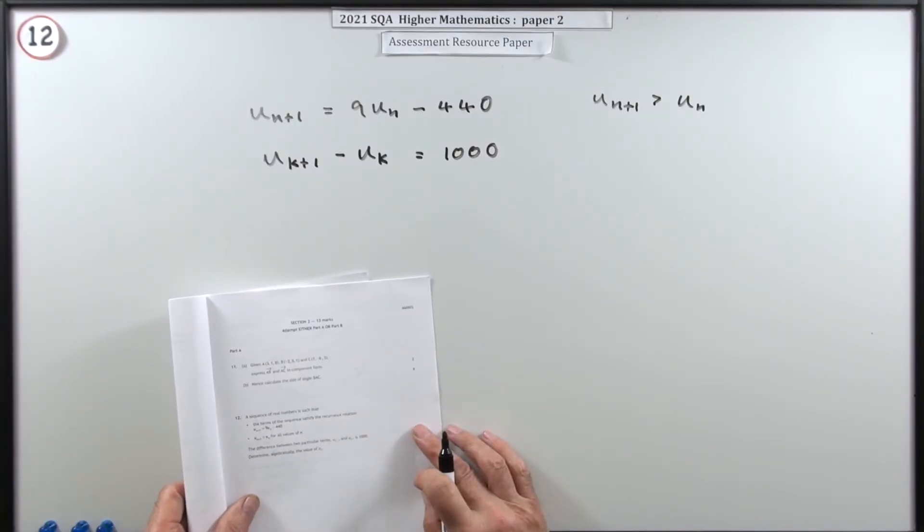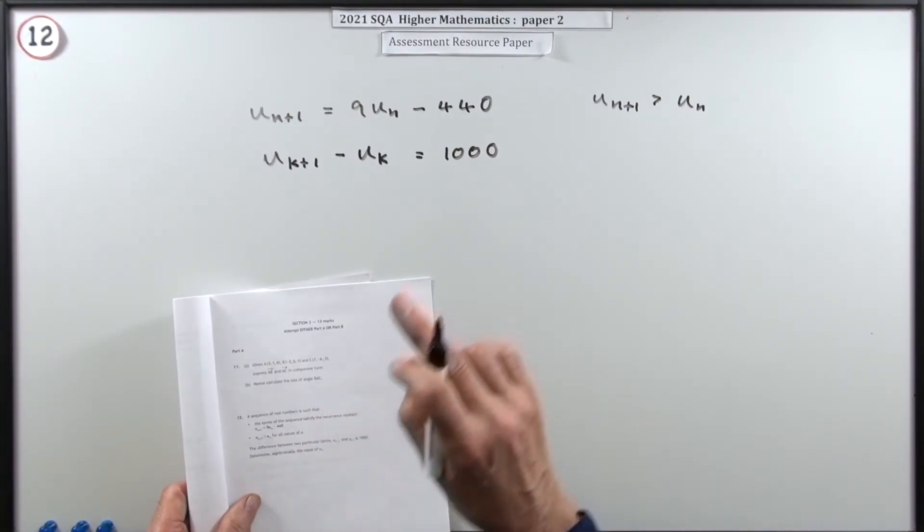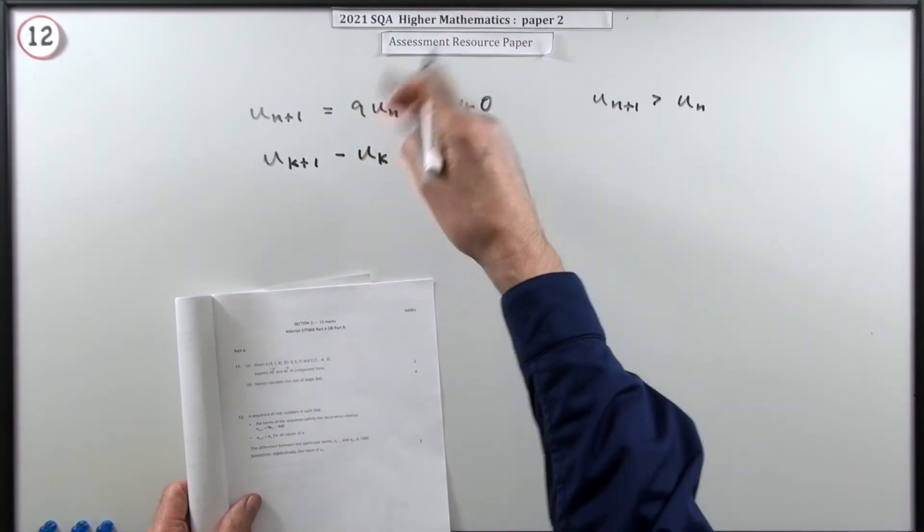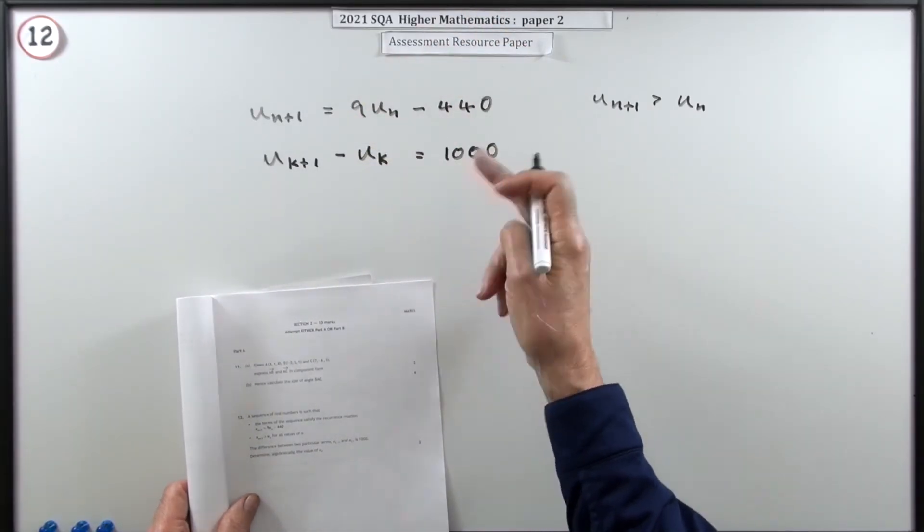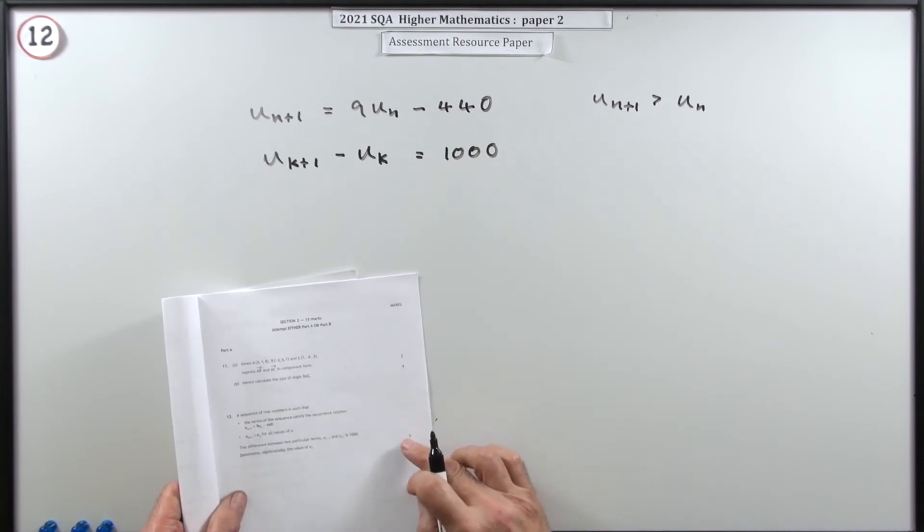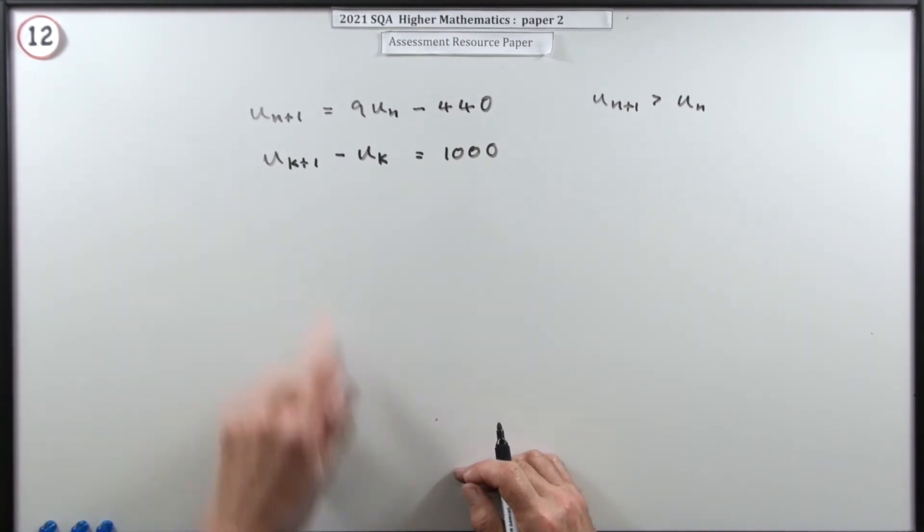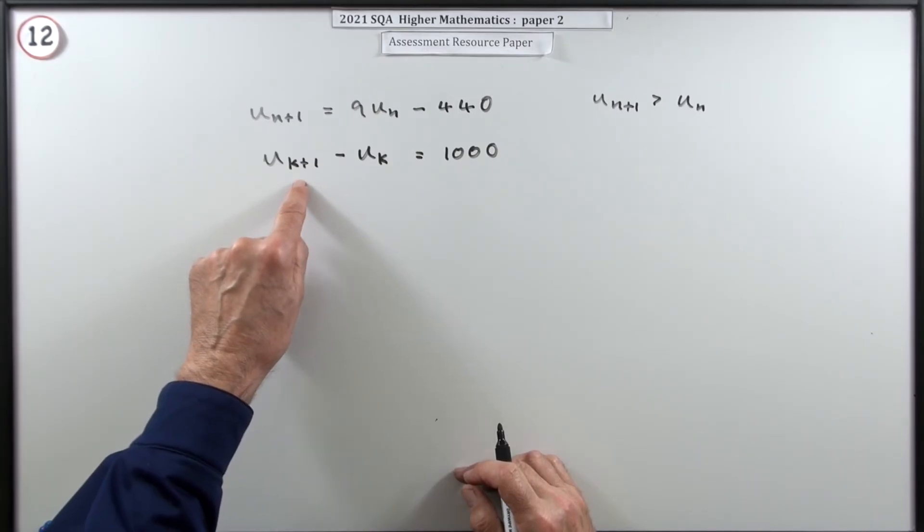Determine algebraically simply means don't just start with some number, try a number and see if you can figure that out by trial and error. Three marks, you don't need to because you've got a formula here. What does that say? It's that U_k+1. How do you get the following term?